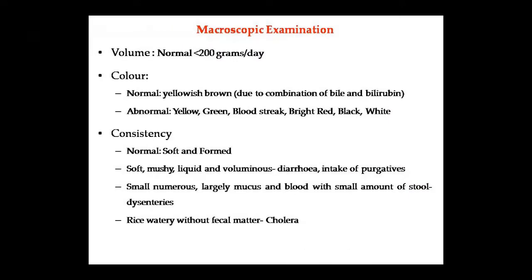First, macroscopic or physical examination: we check the quantity. Normal stool volume is 100–200 grams per day. It depends on the dietary habits of the person — a bulkier stool may be produced within the normal range. Then we check the color. Normal color is yellowish-brown, because of the combination of bile and bilirubin. This color is due to stercobilin, which is a pigment derived from bilirubin after bacterial processing in the gut.